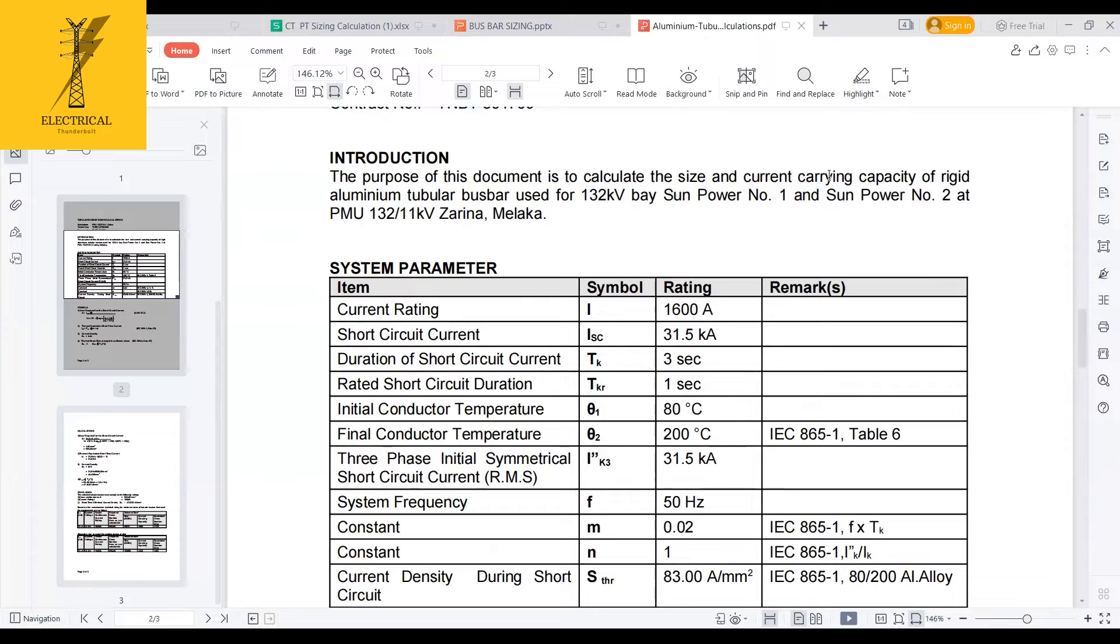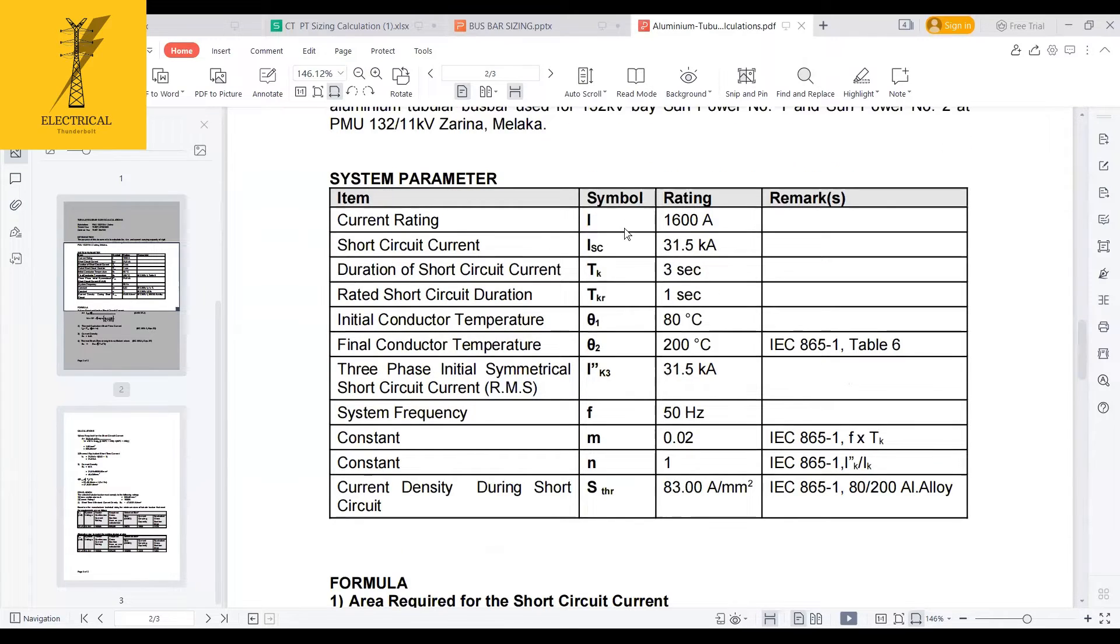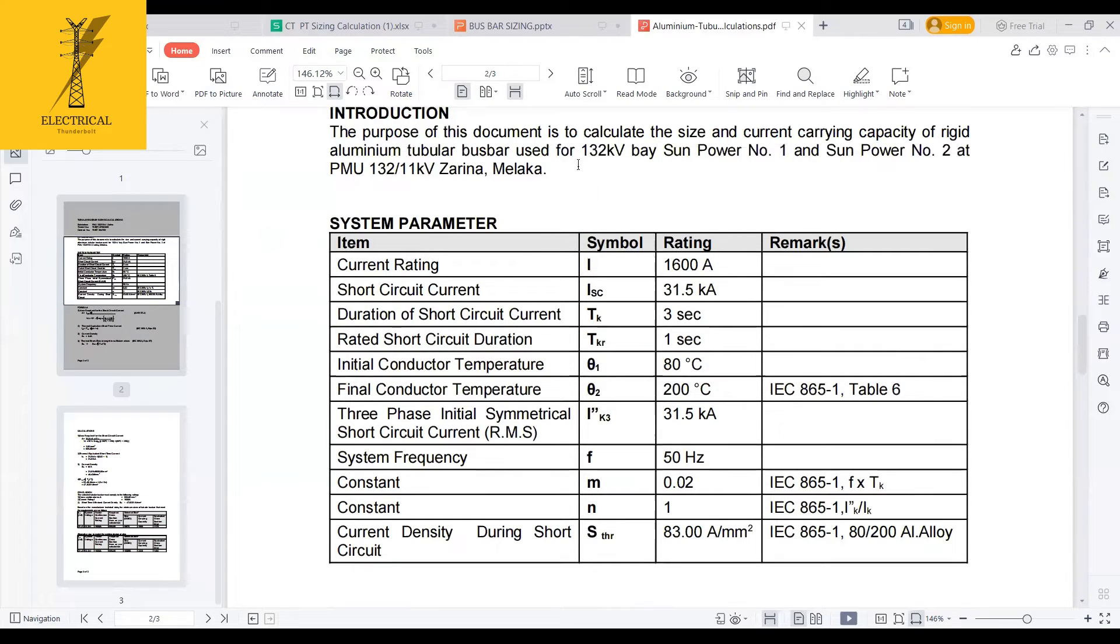They are not doing all the short circuit force calculation, winds, everything. But the way of doing rigid busbar is that. See here, this is one of the projects we have done. The current rating is 1600 amps, the short circuit current for 132 kV is 31.5 kA. And the duration of short circuit current is 3 seconds. And rated short circuit duration is 1 second. Initial conductor temperature is 80 degrees. And finally, it is 200 degrees, which I extracted from IEC 865-1 table 6. I will share you this document also.